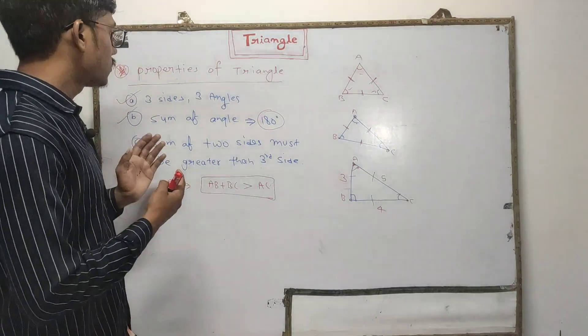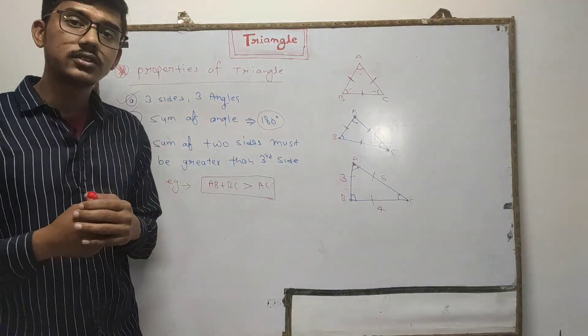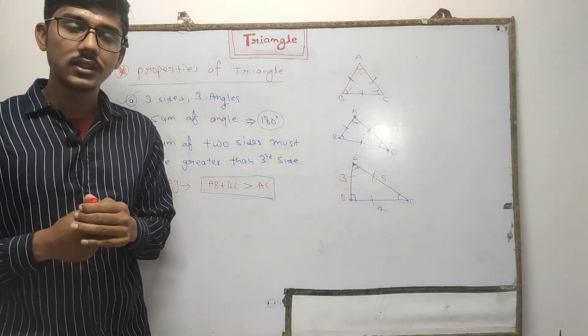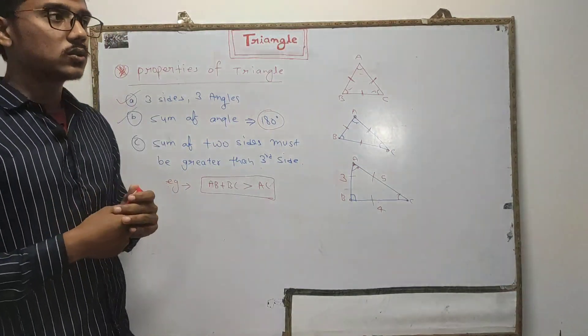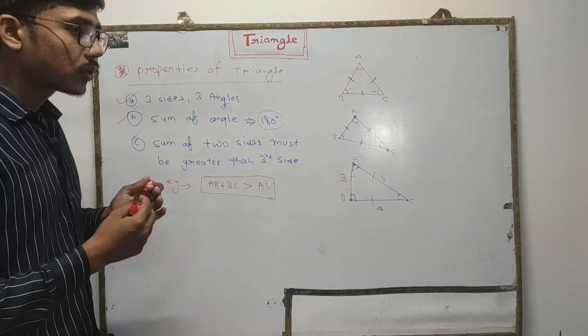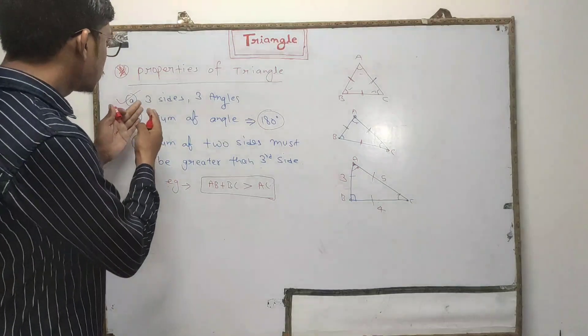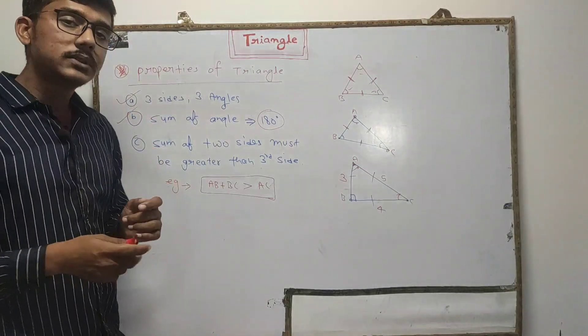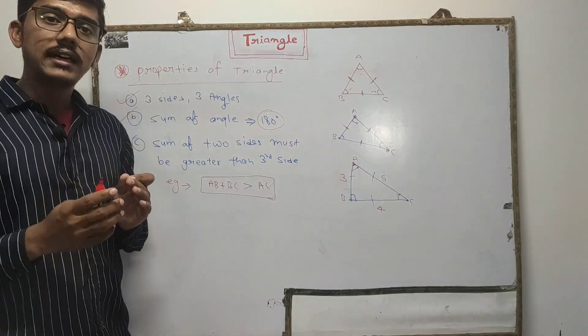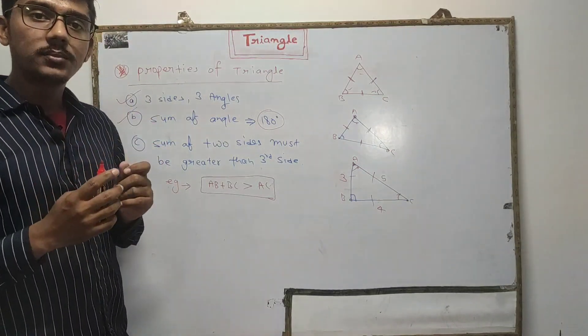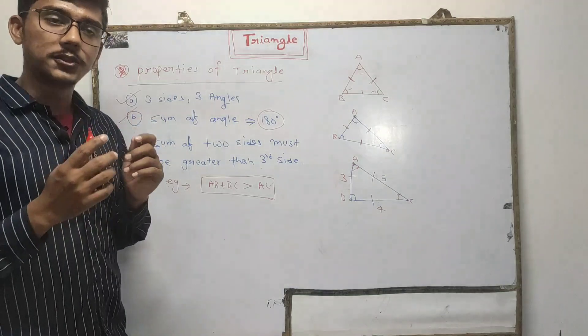Now we will understand what are the properties of a triangle. The first property is there should be three sides and three angles present in a closed figure.